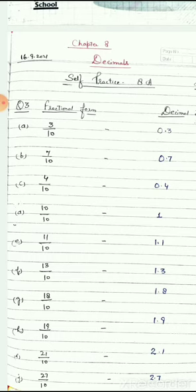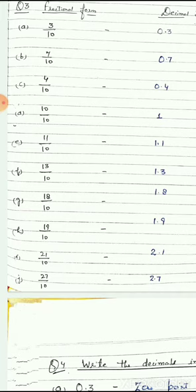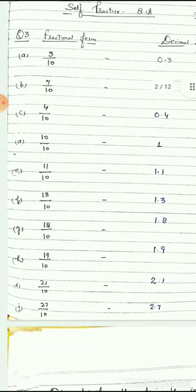3 upon 10 means 3 parts out of 10, and is also written as 0.3. 11 upon 10 means 11 parts out of 10, and is also written as 1.1. Look at another number: 27 upon 10 means 2.7. Similarly, some other numbers — we can write 15 upon 100 and 32 upon 1000.